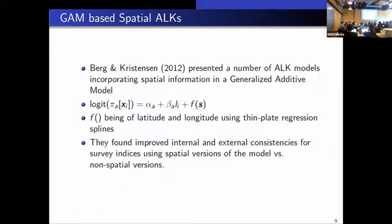So Berg and Christensen presented a number of age-length key models incorporating spatial information using generalized additive models. So they did this by adding, for example, a spatial intercept of latitude and longitude using thin-plate regression splines. And they found improved internal and external consistencies for survey indices when using spatial versions of the model versus non-spatial versions.